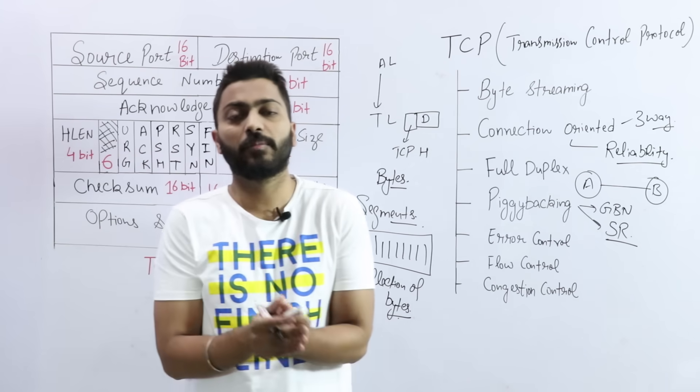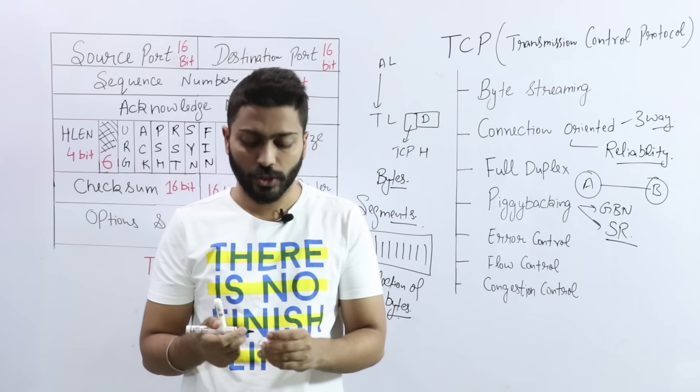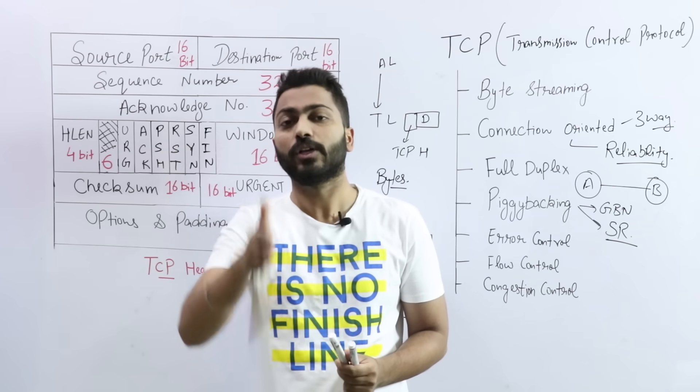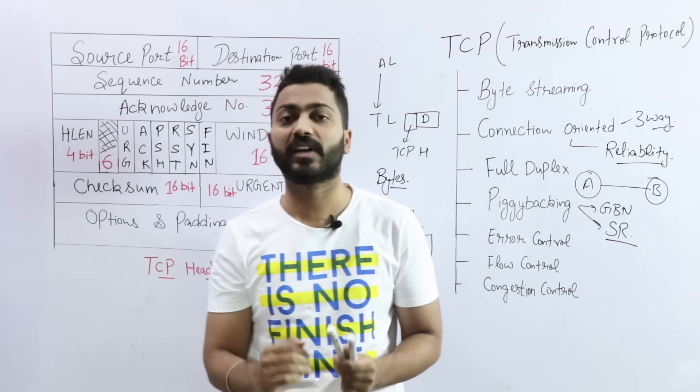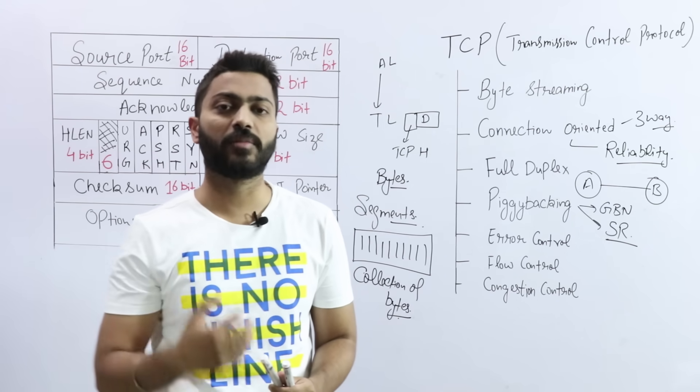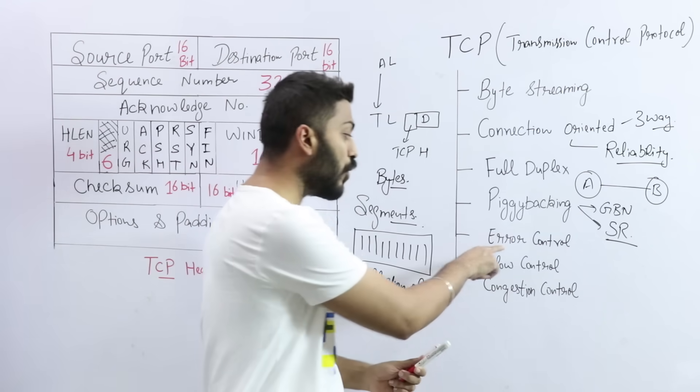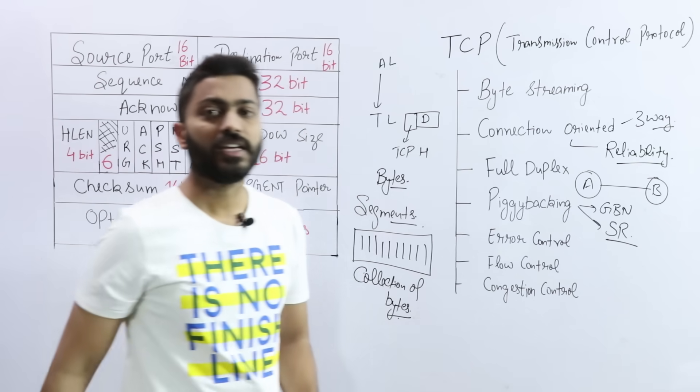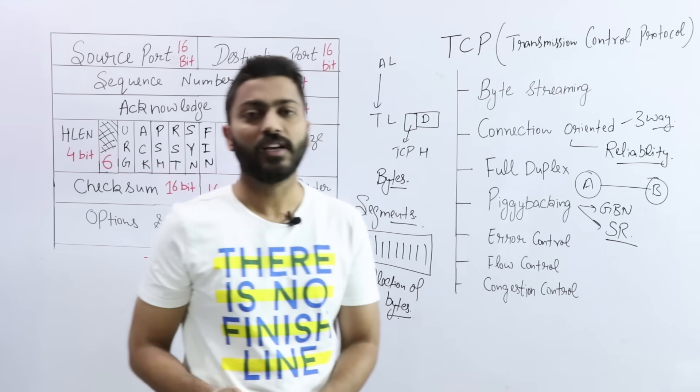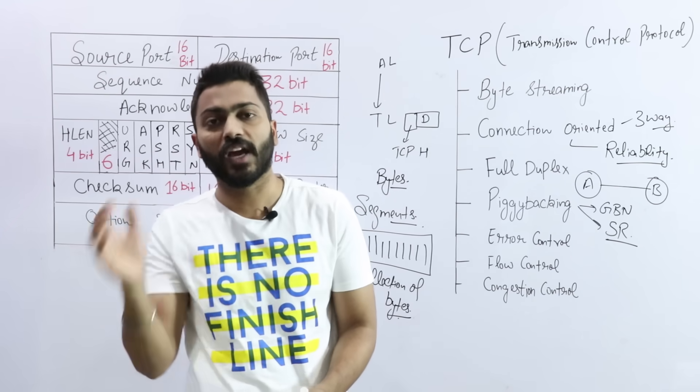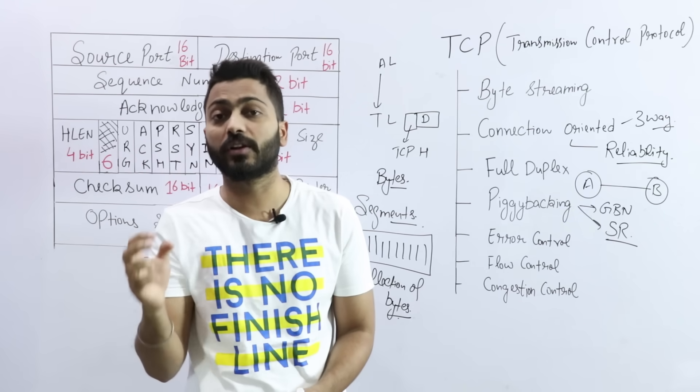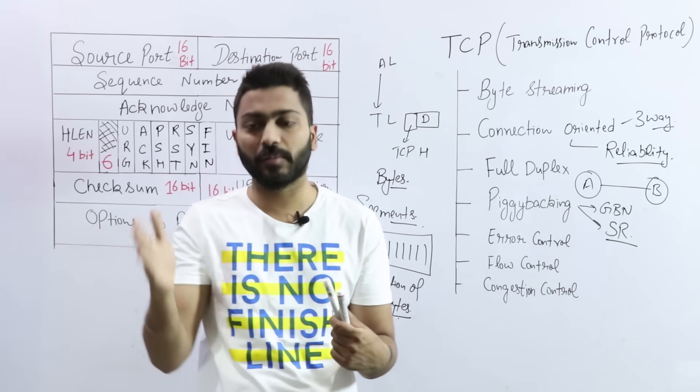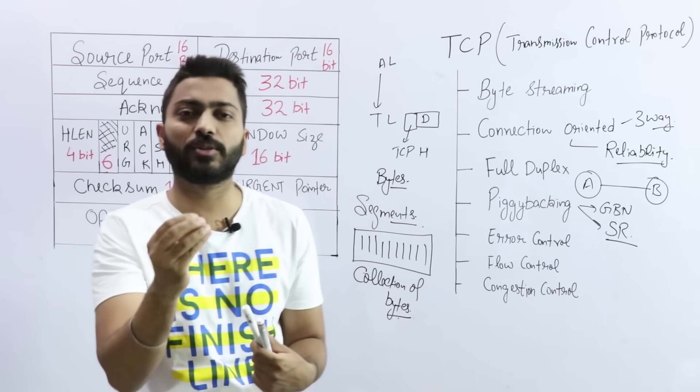Error control. TCP also provides error control. Error control means if I am sending data and in that data some change occurred due to some noise or due to some other activity, there is some change occurred in the data. The person who is receiving the data should at least be able to detect that there is some kind of error in the data. So TCP supports error control and these are the mandatory fields in the TCP.